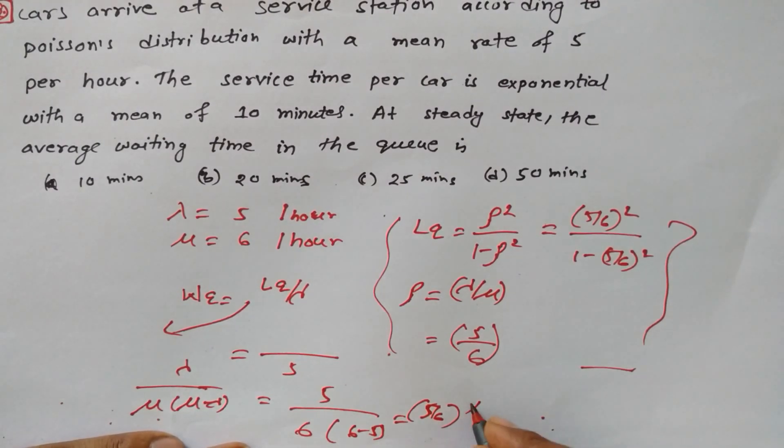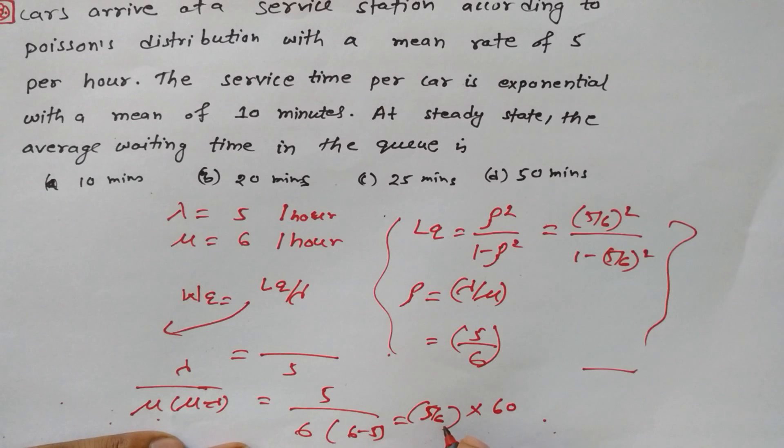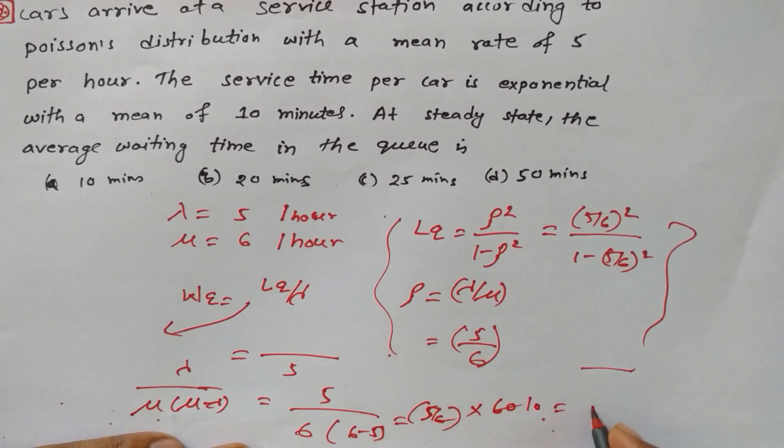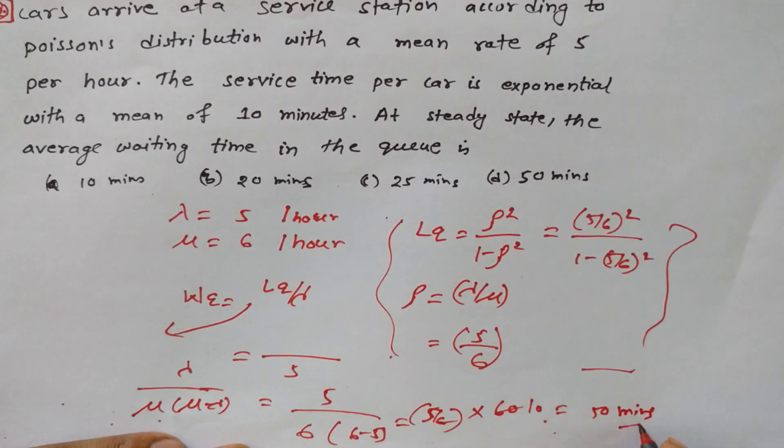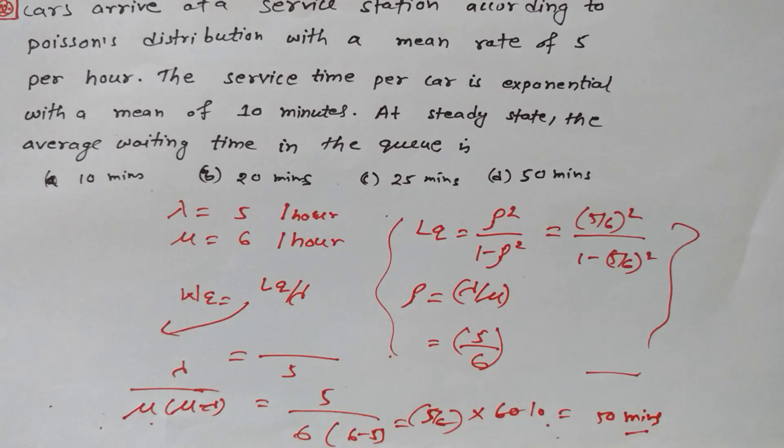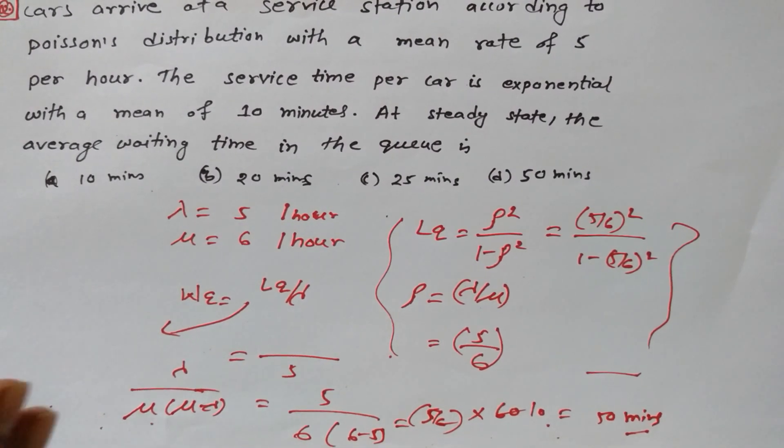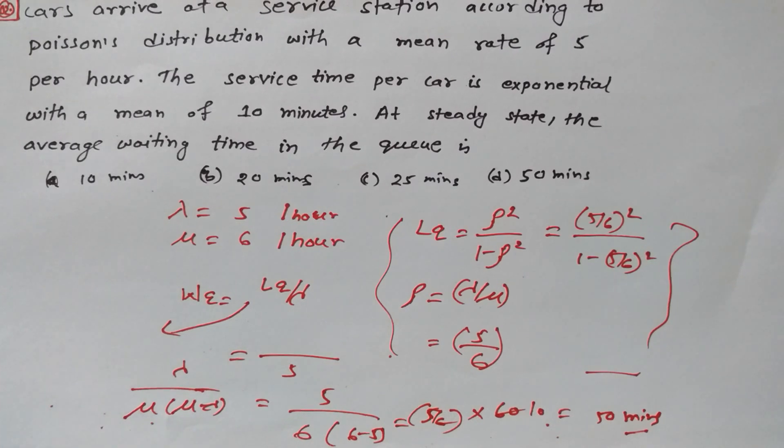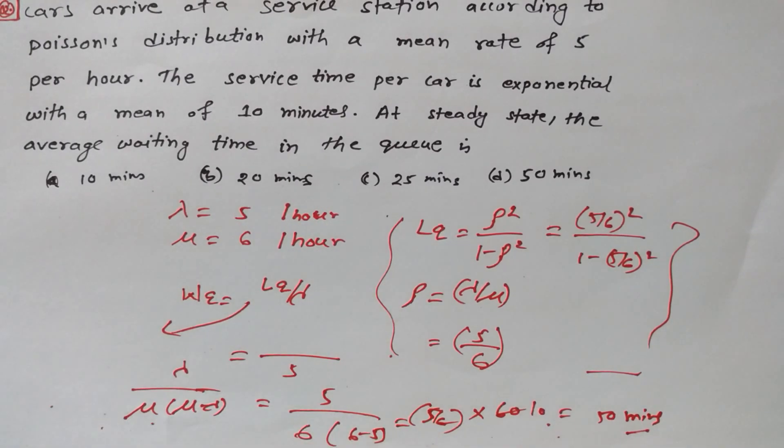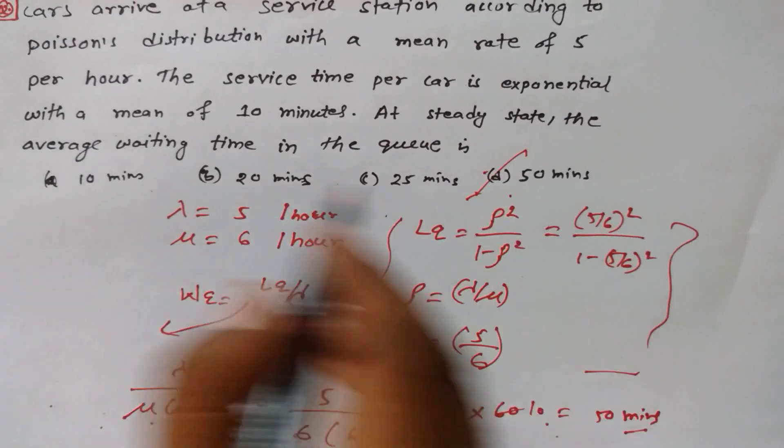This is in hours. If we convert this into minutes, then 5 times 10 equals 50 minutes. So the average time the person needs to wait to get service from the service station is 50 minutes. D is the right answer for this question.